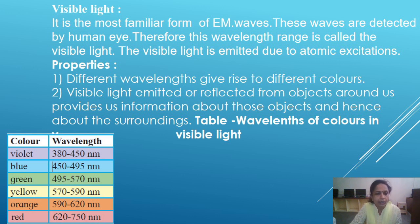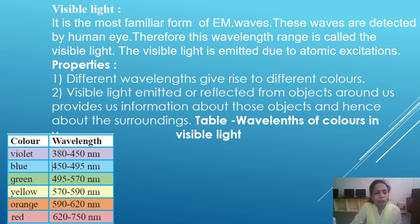The wavelengths of colors in visible light are: Violet — 380 to 450 nm; Blue — 450 to 495 nm; Green — 495 to 570 nm; Yellow — 570 to 590 nm; Orange — 590 to 620 nm; Red — 620 to 750 nm. Note: 1 nanometer equals 10 raised to minus 9 meters.